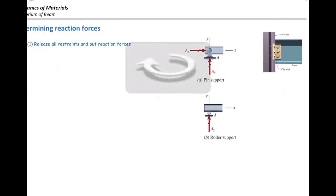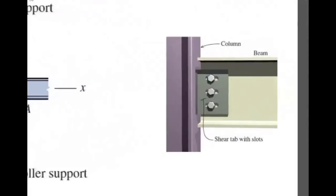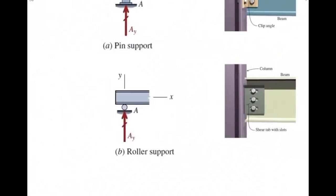The second type of support is the roller support. In the real world, we are not literally placing a beam on top of a sphere or cylinder, but we represent it that way. It is called a roller support because the shape allows it to slide a little based on the applied force. So it is free in the x-axis but restrained on the y-axis — both upward and downward.